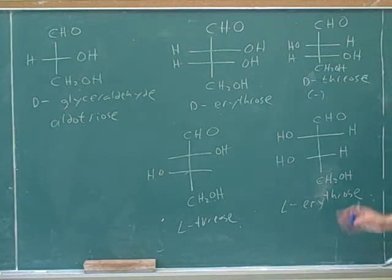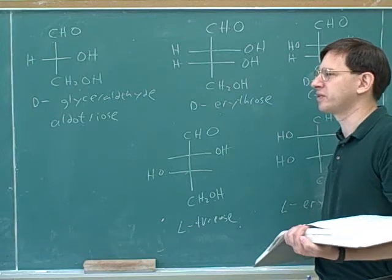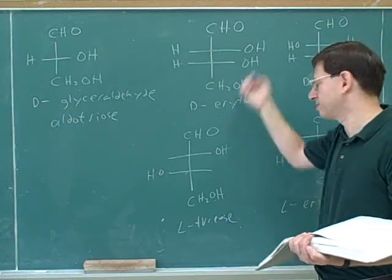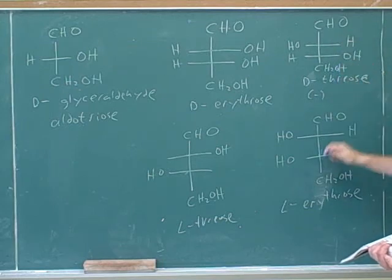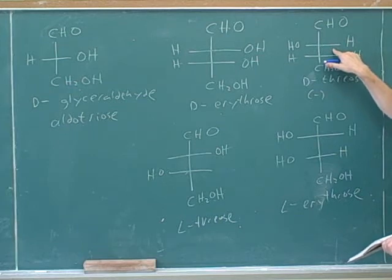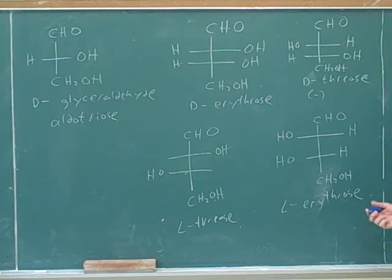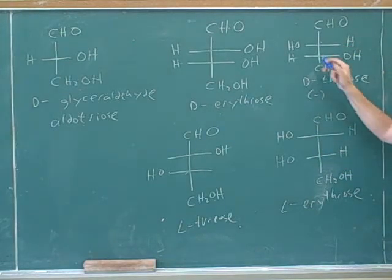Why is reversing only the bottom stereocenter such a tempting trap? People confuse two ideas: when determining D or L, you focus only on the bottom stereocenter. But to determine the relationship between two structures, you must look at all stereocenters. Enantiomers have opposite configuration at ALL stereocenters. If two structures have the same configuration at one stereocenter and opposite at another, they are diastereomers — which is exactly the relationship between D-threose and the structure with only the bottom reversed.